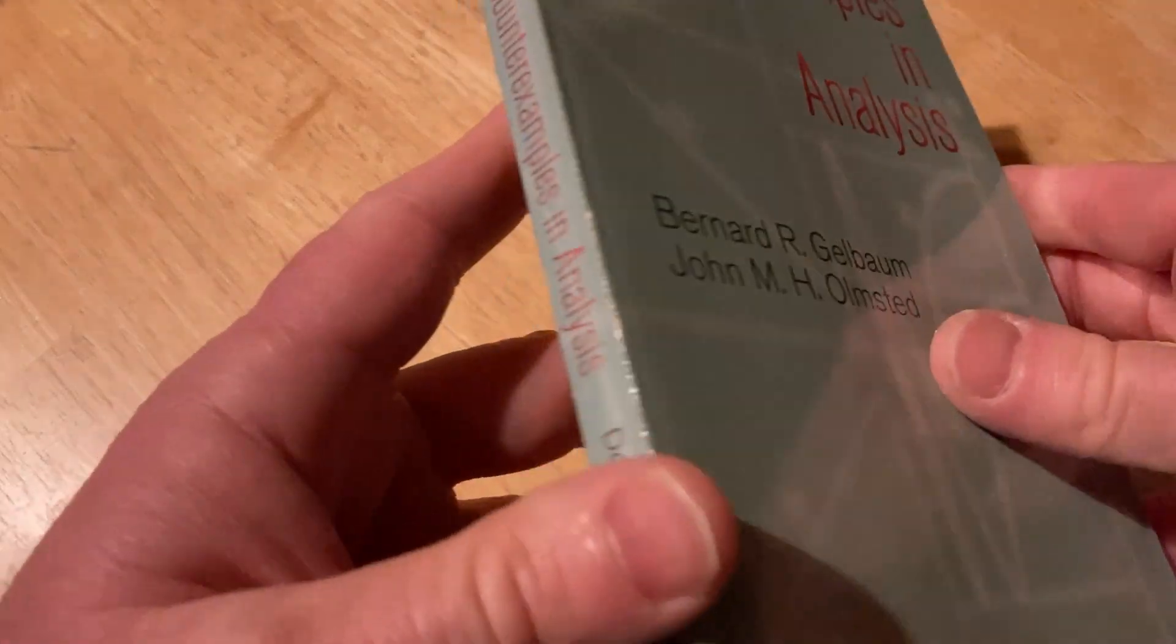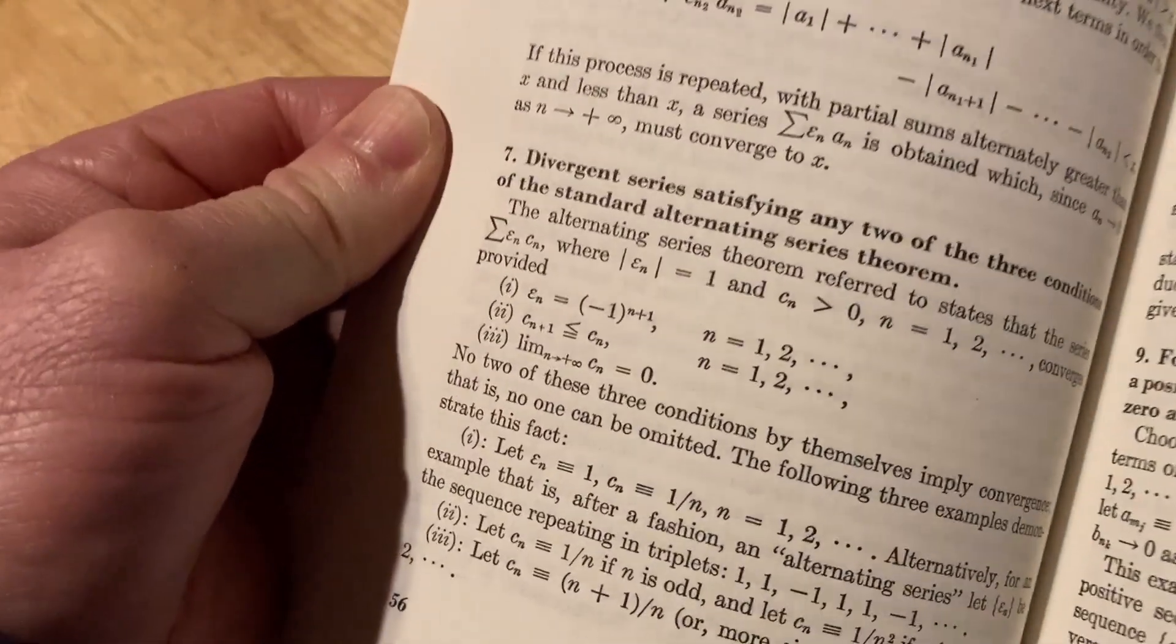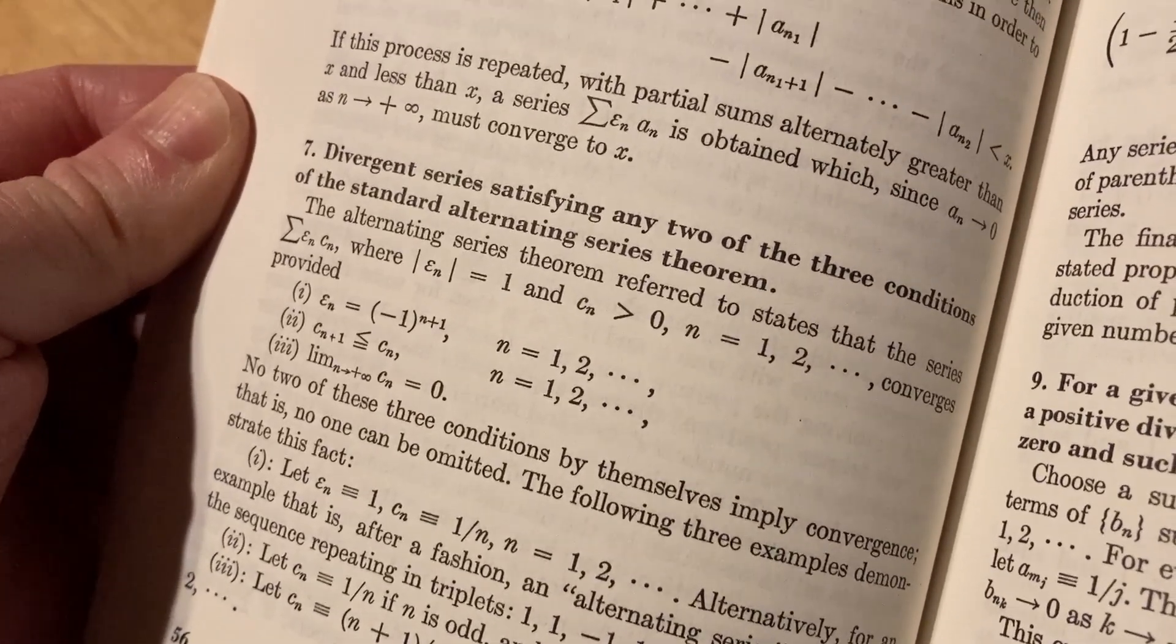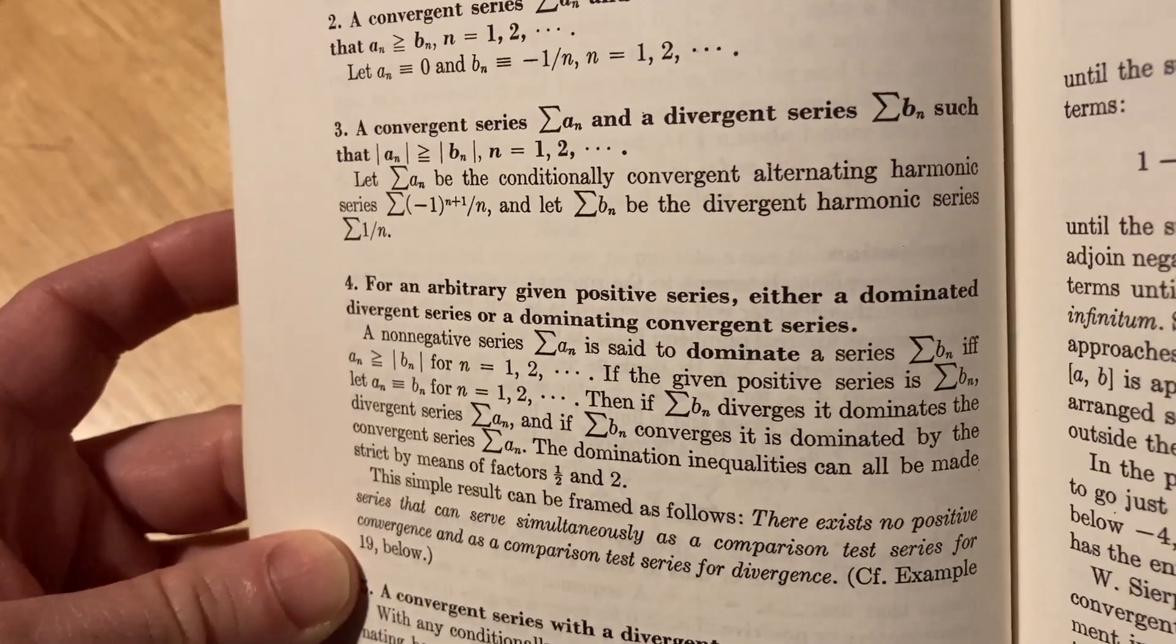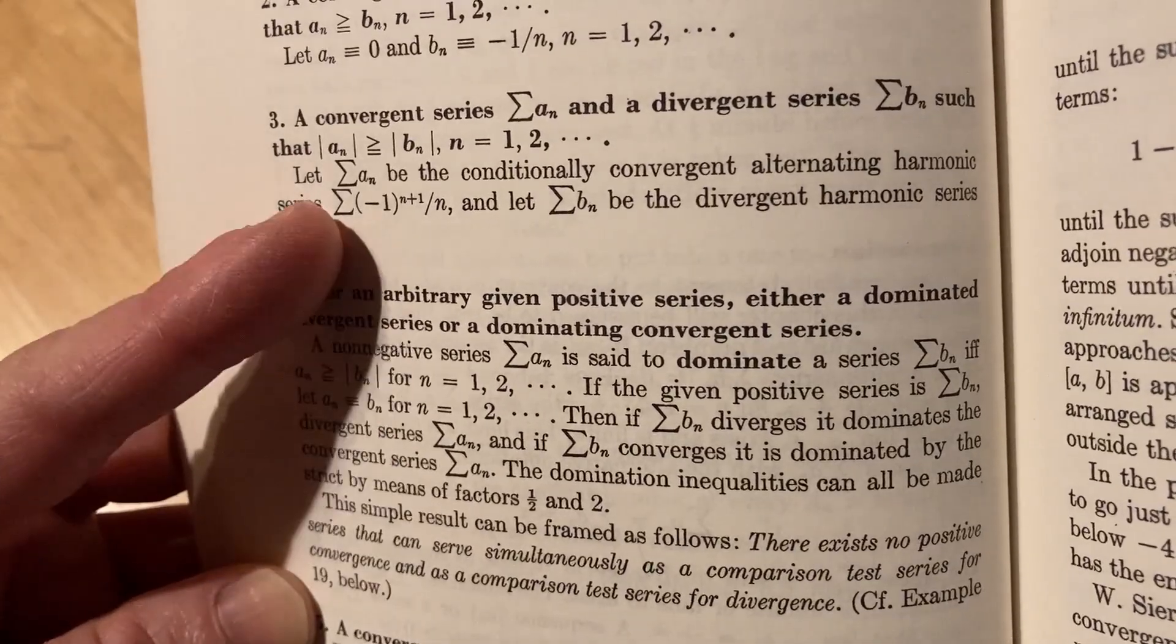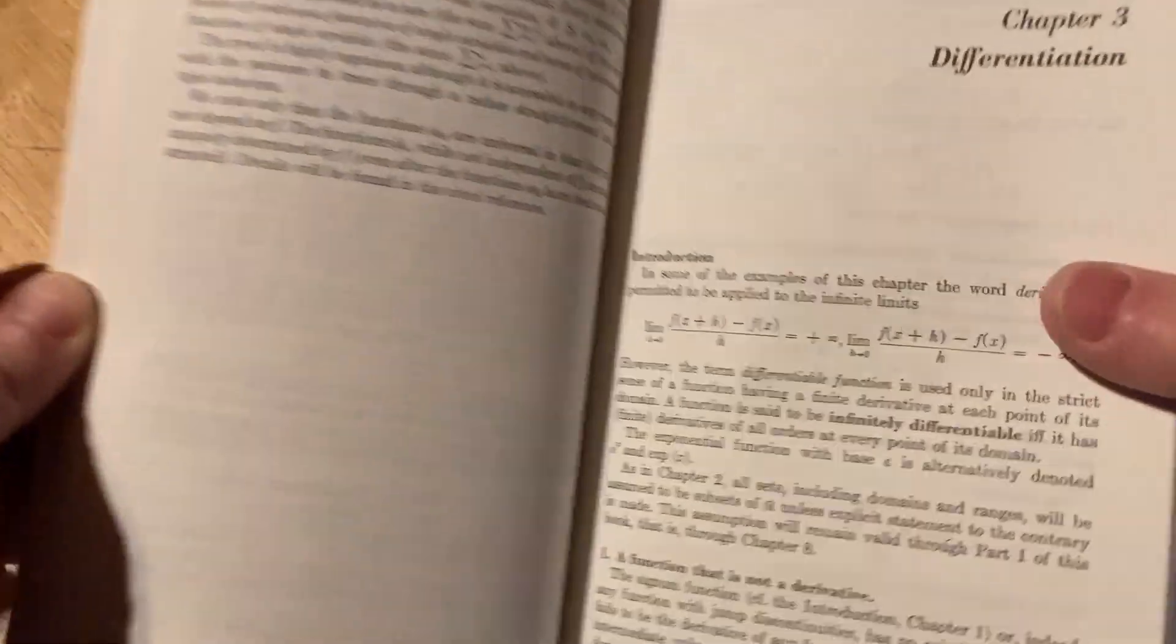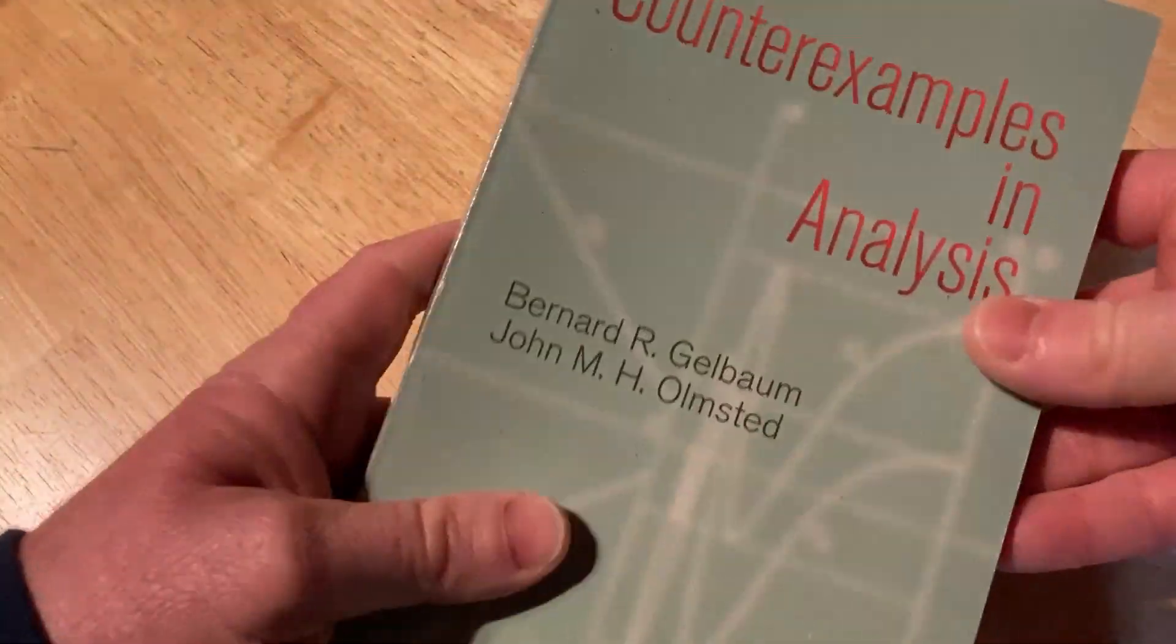Its counterpart is counterexamples in analysis. Another really strange book that has just a lot of strange mathematics in it. It just has counterexamples, basically. Not all of it is super strange. Here's an example. Divergent series satisfying any two of the three conditions of the standard alternating series theorem. How about this one here? A convergent series a_n and the divergent series b_n such that these terms are bigger. So the terms are actually bigger. It says, let a_n be the conditionally convergent alternating harmonic series. So interesting examples. And it's not just series. It's differentiation. It's infinite series. You have integration. You have limits. So it's got a lot of really cool stuff.